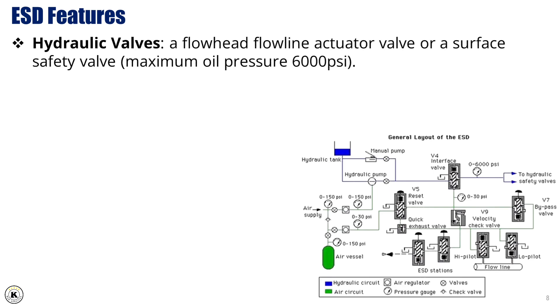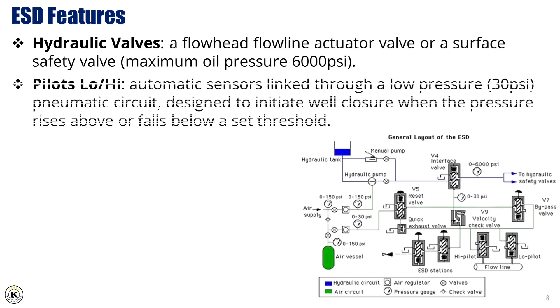ESD features: The ESD system features hydraulic valves — a flowhead flowline actuator valve or a surface safety valve — with a maximum oil pressure of 6000 PSI. High or low pilots use an automatic sensor linked through a low-pressure, 30 PSI, pneumatic circuit, designed to initiate well closure when the pressure rises above or falls below a set threshold.